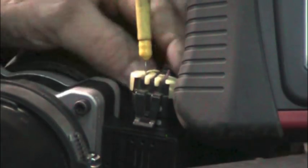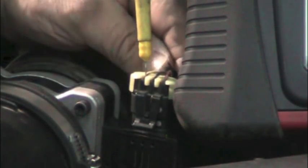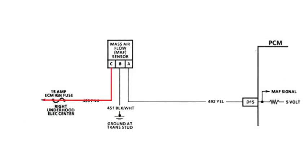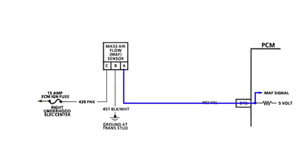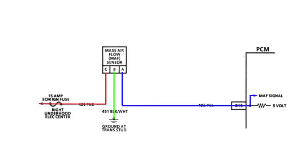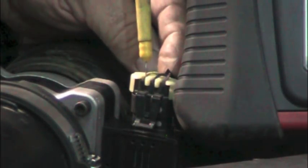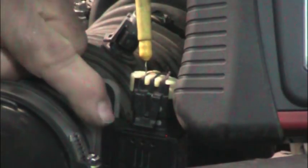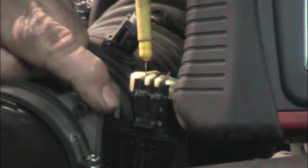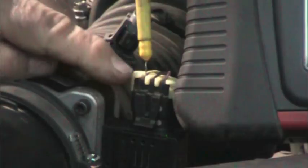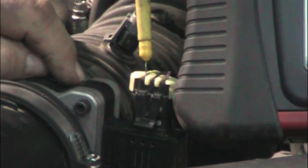In the mass air flow connector you're going to have three wires. One is going to be a ground. The other one is going to be 12 volts coming from the battery. And the other one is going to be the signal wire. The ground should be ground and the 12-volt wire should be coming from the battery. The mass air flow is a frequency generator — it generates a signal that is sent out on the signal wire.